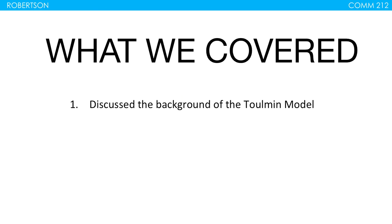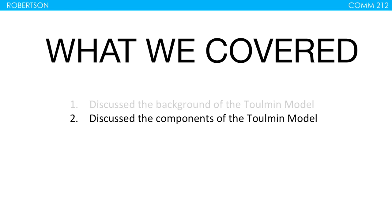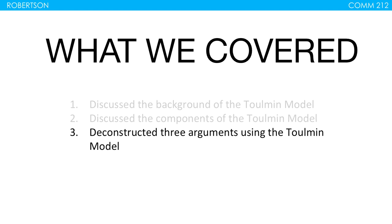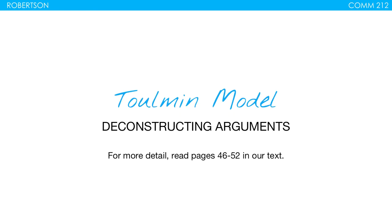So what we covered today: we discussed the background of the Toulmin model and Stephen Toulmin himself; the six components — three essential and three non-essential; and we deconstructed three different arguments using the Toulmin model. This is a great tool for deconstructing arguments. If you want to read more, check out Herrick's 2015 Understanding and Shaping Arguments, pages 46 to 52, which covers this and gives examples from Toulmin's original book. Now if you ever see an argument, you can ask: what's the claim? What data is being used to support it? And is that data appropriate to support that claim? From there, you'll have a much better understanding of what the argument actually entailed.